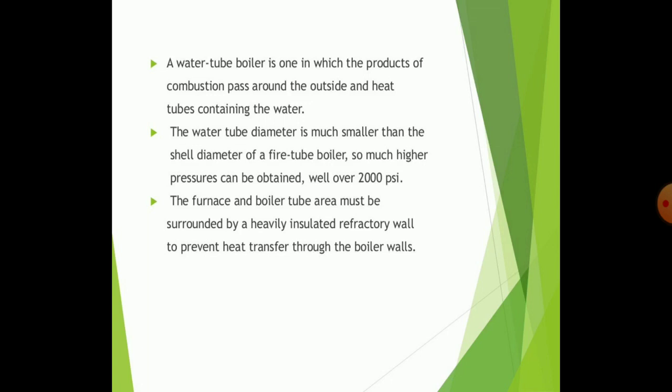The water tube boiler is one in which combustion passes around the outside of heat tubes that contain the water. The water tube diameter is much smaller compared to the shell diameter of a fire tube boiler, so much higher pressure can be obtained — over 2,000 pounds. The furnace and boiler tubes must be surrounded by heavy insulated refractory walls which prevent heat loss through the boiler walls.